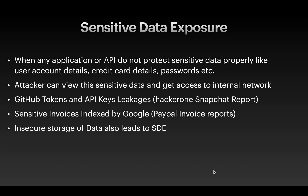GitHub tokens and API keys being leaked onto the internet can also lead to sensitive data exposure. A very good example is a Snapchat report submitted by a security researcher on HackerOne, wherein he was able to find a token which was indexed by Google and present in GitHub. He reported that token and received a fifteen thousand dollar bounty as a reward.